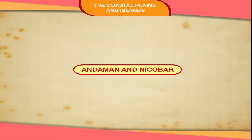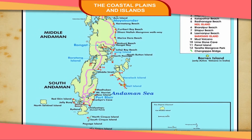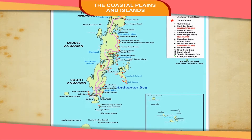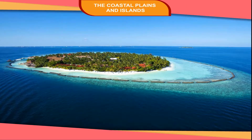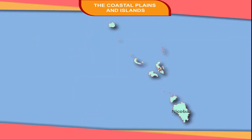Andaman and Nicobar Islands are a group of about 300 islands in the Bay of Bengal. Port Blair is the capital of the Andaman and Nicobar Islands. The northern part is called the Andaman Island and the southern part is called the Nicobar Island.